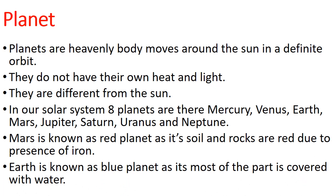Planets are heavenly bodies that move around the sun in a definite orbit. They do not have their own heat and light. In our solar system, there are eight planets: Mercury, Venus, Earth, Mars, Jupiter, Saturn, Uranus, and Neptune.